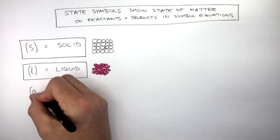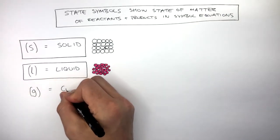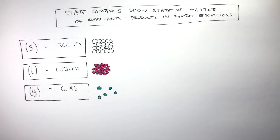A G in brackets means the substance is a gas. A substance which is a gas will have a particle diagram where the particles are far apart and randomly arranged. Remember, if a substance is a gas, it is represented by a G in brackets.